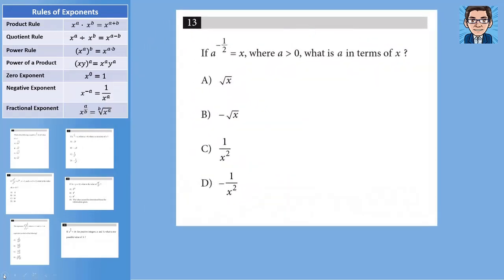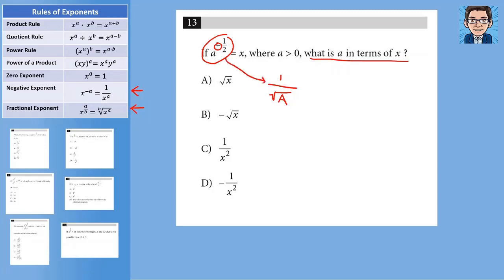The second problem: a to the negative 1 half equals x. We're trying to find what a is in terms of x — essentially solving for a. One approach is to rewrite this as a radical. The 1 half fractional exponent means the square root of a, and because it's negative, it becomes 1 over the square root of a. So a to the negative 1 half becomes 1 over the square root of a, and that equals x.